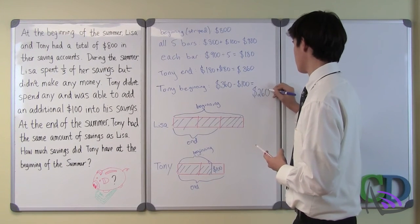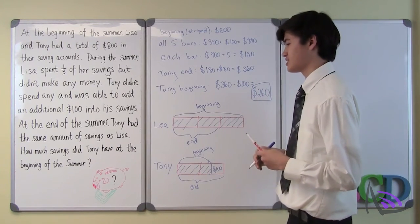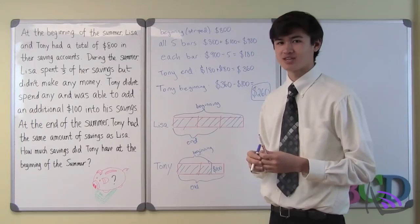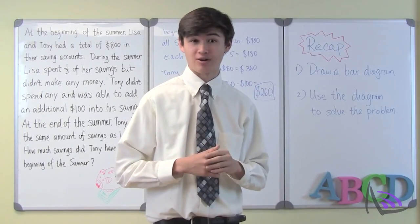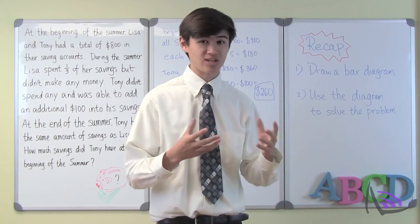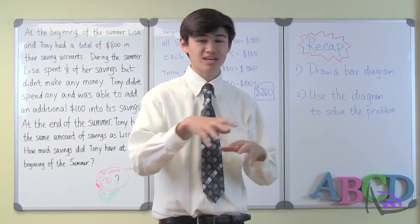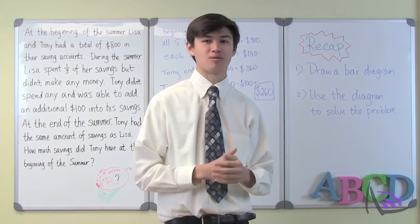So Tony had $260 at the beginning of the summer. Let's recap: first, draw a bar diagram using bars to represent the knowns and unknowns in the question and illustrate their relationships among each other. Second, use the diagrams to solve the problem.